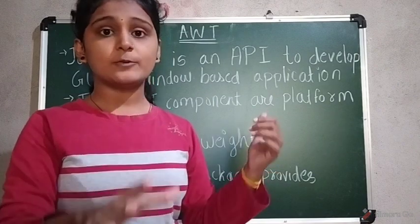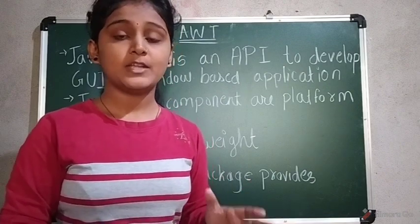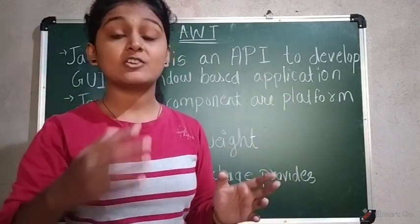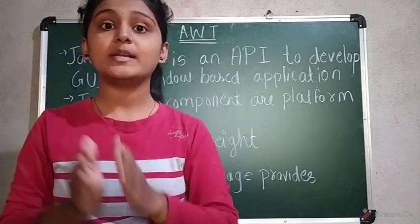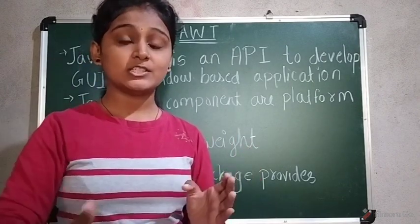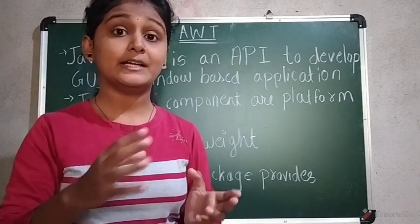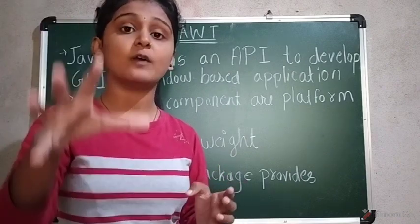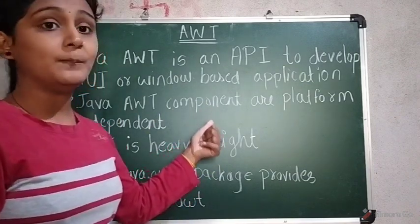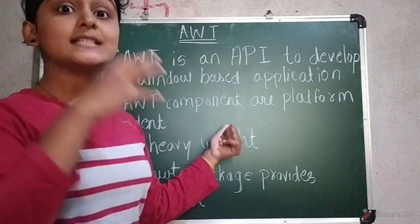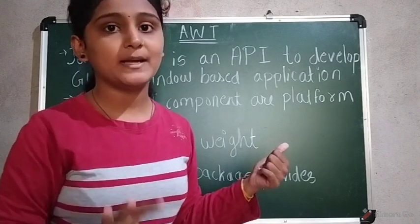Why are they platform dependent? There are two reasons. First, suppose you made an AWT program on a Windows operating system and then run it on Linux — the look and feel will change to be compatible with that Linux OS. Whenever you change the operating system or run on different hardware, it adapts accordingly, making it platform dependent. Second, the components such as button, text field, and label are made with C and C++ languages, which are themselves platform dependent languages.